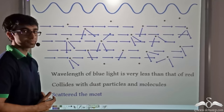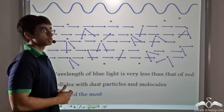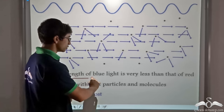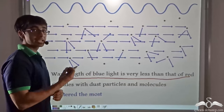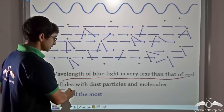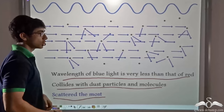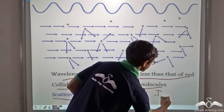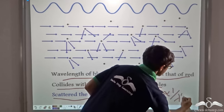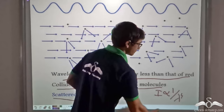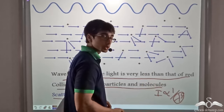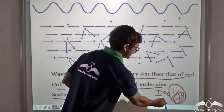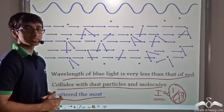Lastly, if we consider blue light, we can see that it is getting scattered to a very large extent. This is because the wavelength of blue light is the least among red, green and blue — it is the minimum of the three. So it collides with dust particles and molecules and is scattered the most. Using the formula, since the wavelength of blue light is minimum, the denominator is very small, so the entire fraction is much larger than for red or green. Therefore, the intensity of scattering for blue is much more than that of green or red.